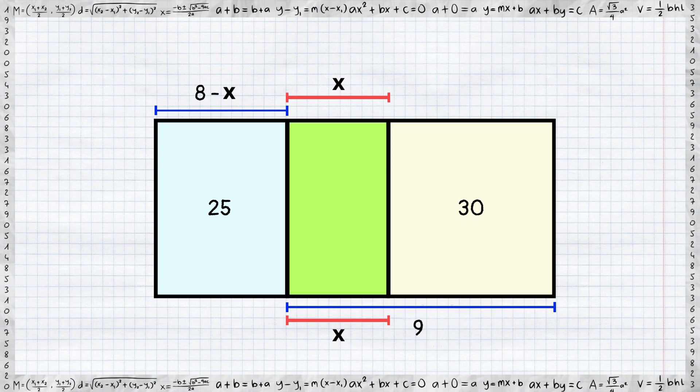So, the width of the third rectangle would be 9 minus x. Moving further, let's suppose a common height for all three rectangles is y.